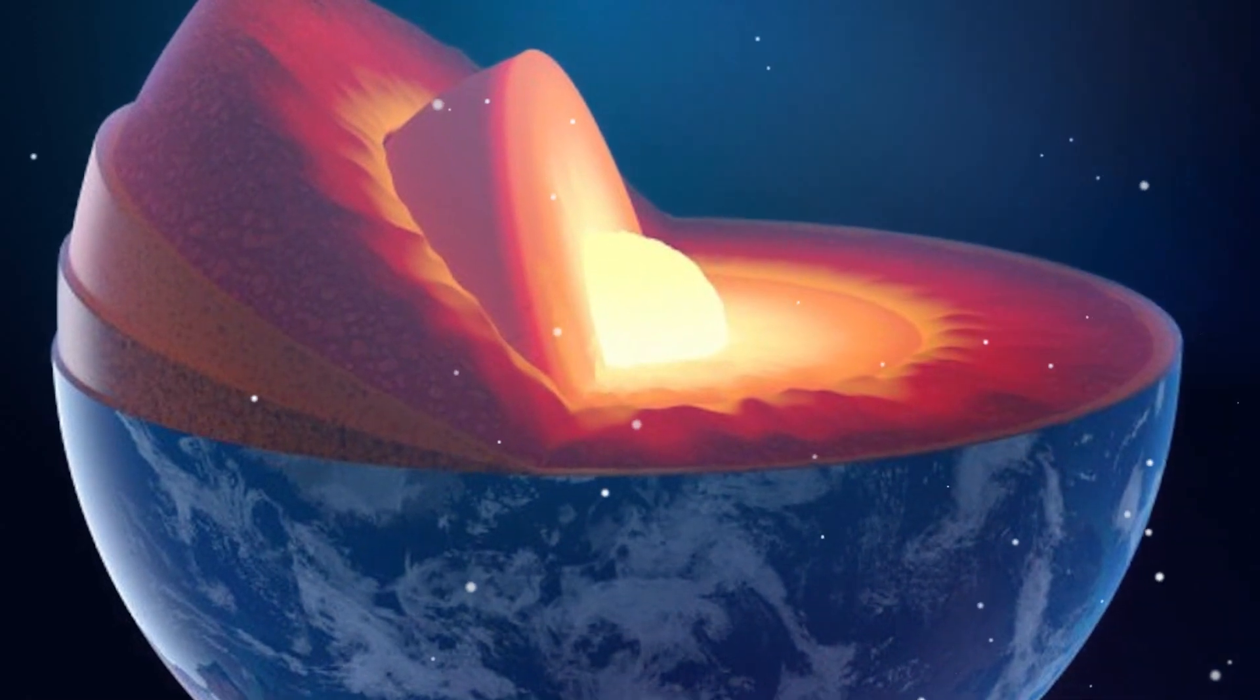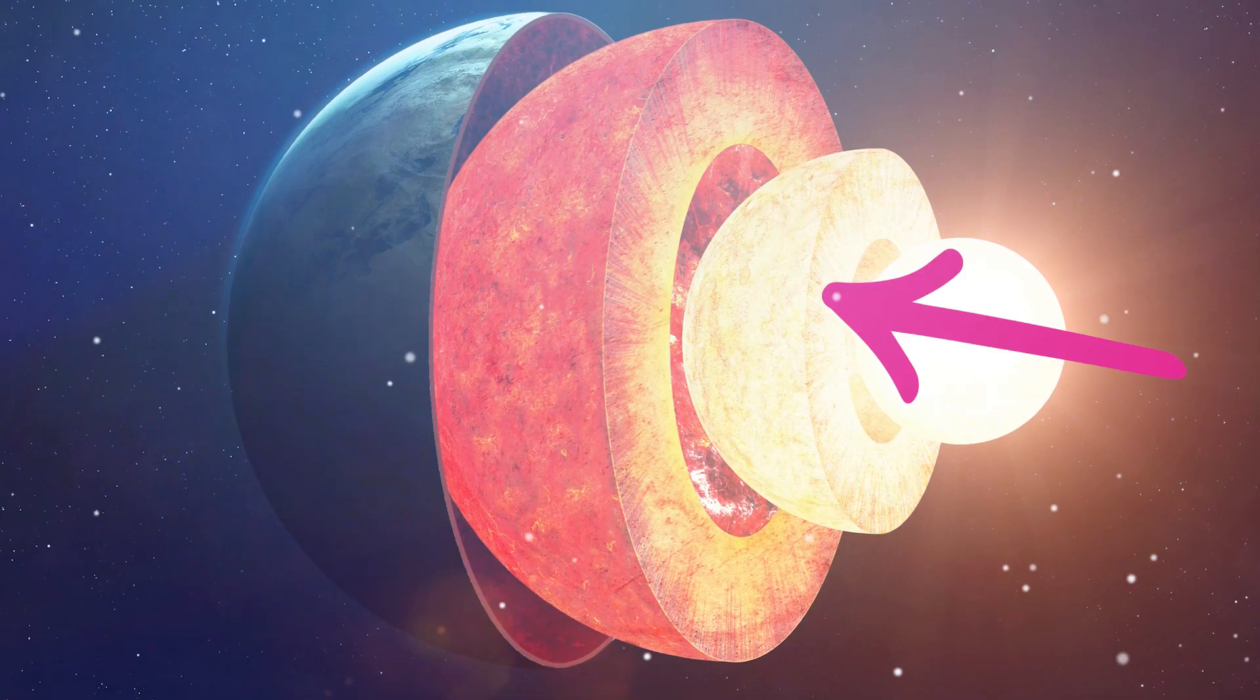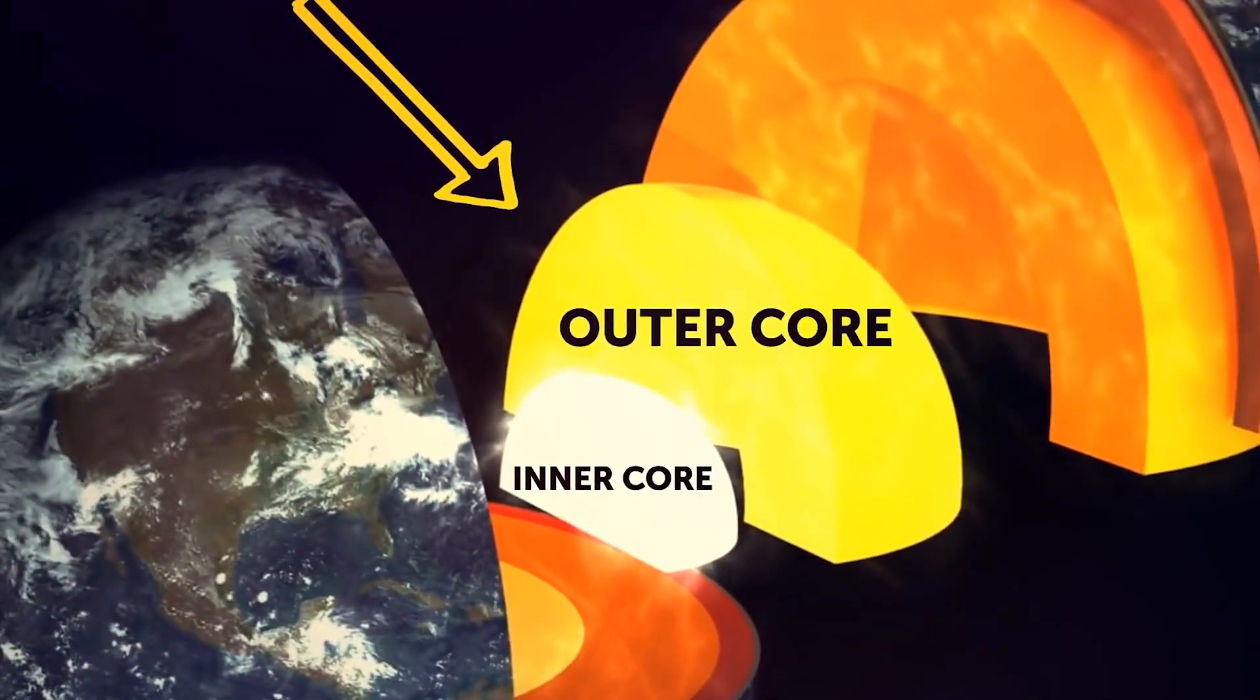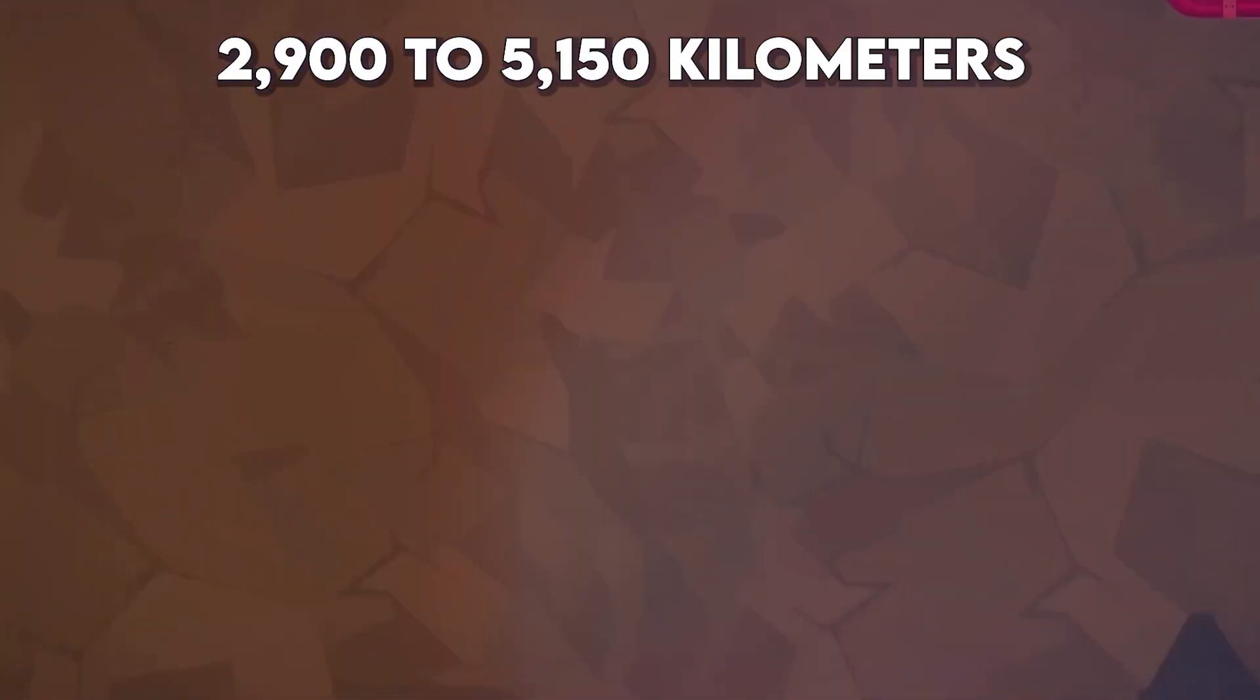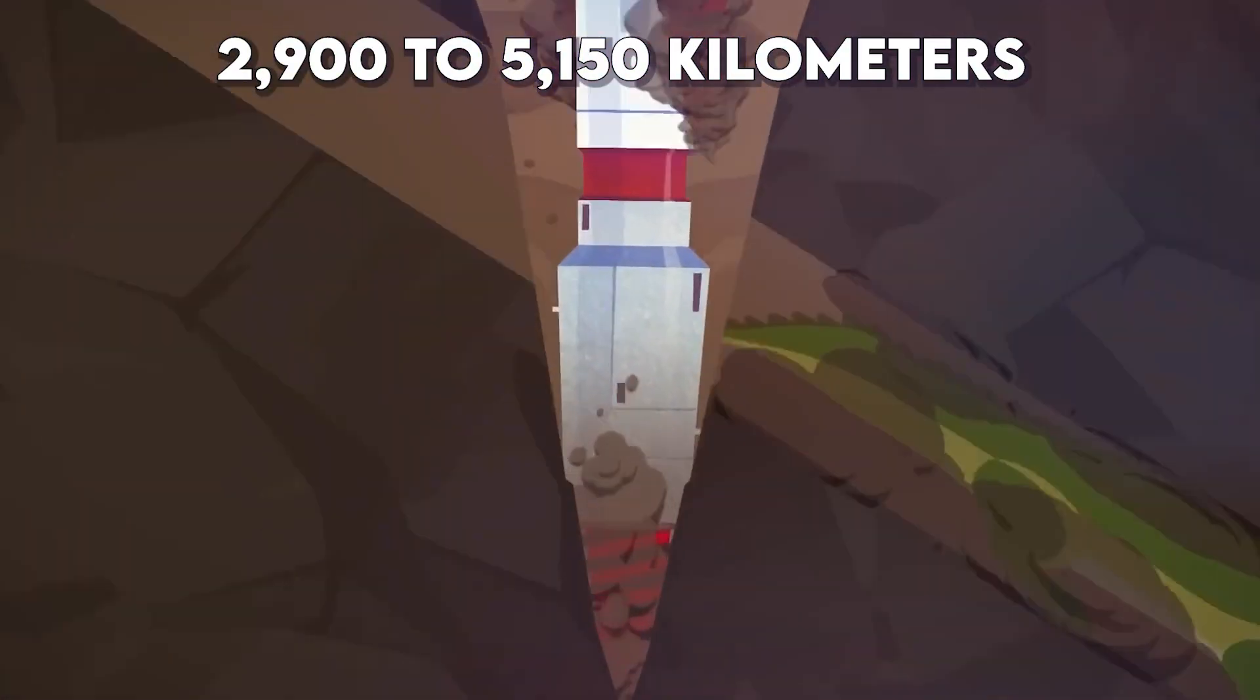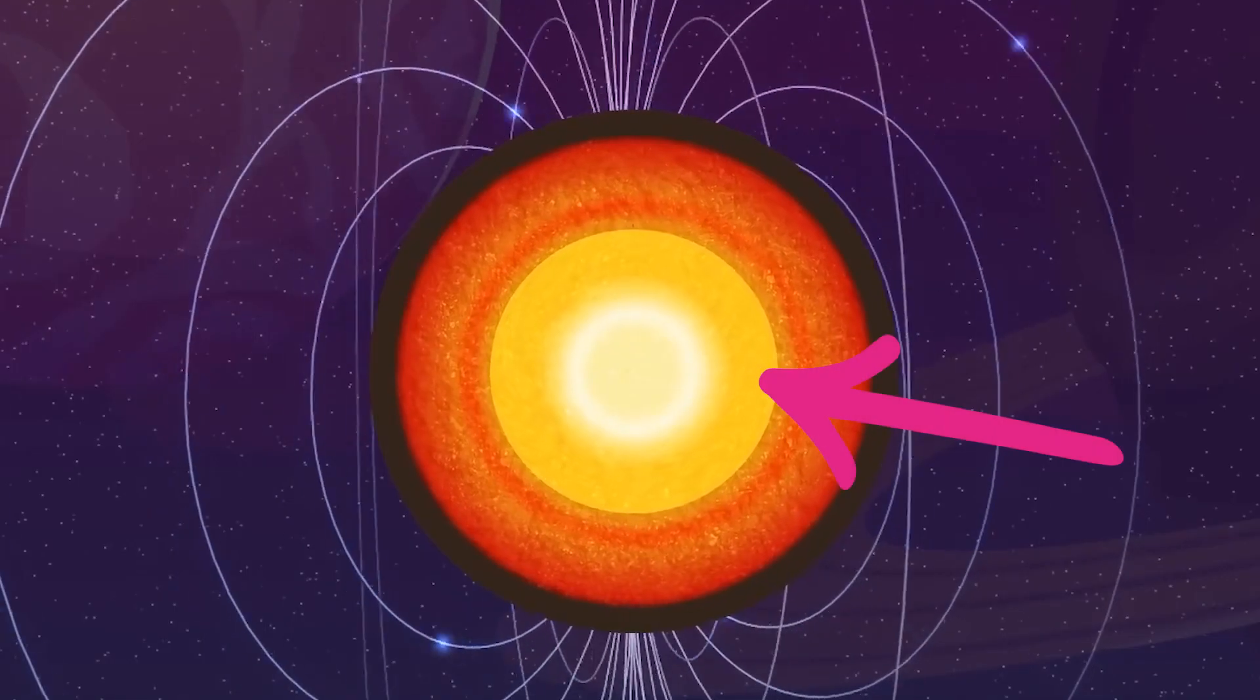Now if you thought the mantle was playing it cool, wait till you meet the earth's outer core. This layer, located from about 2,900 to 5,150 kilometers down, is what gives us our magnetic field - the invisible force that makes compass needles point north.